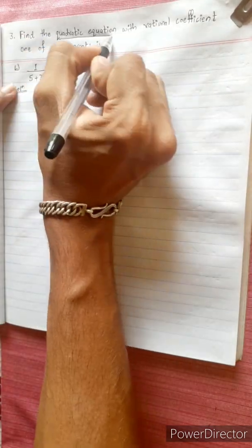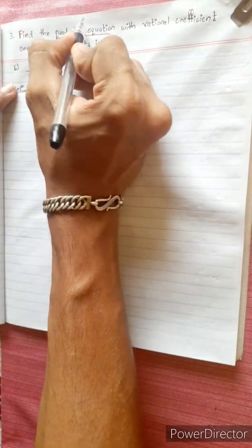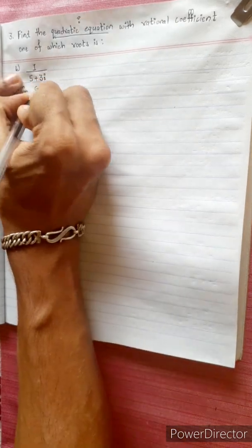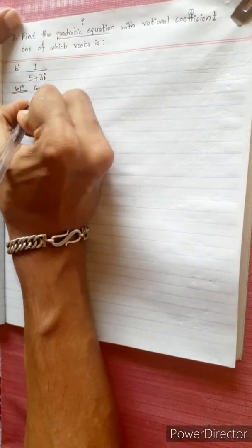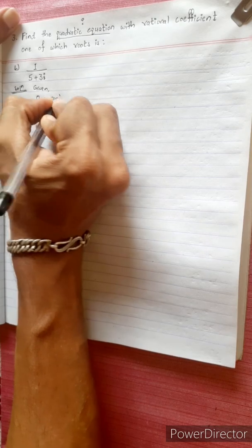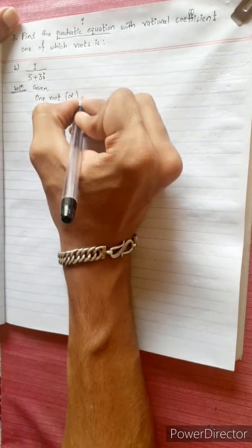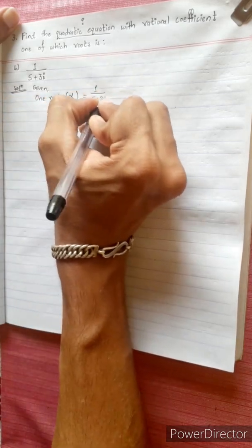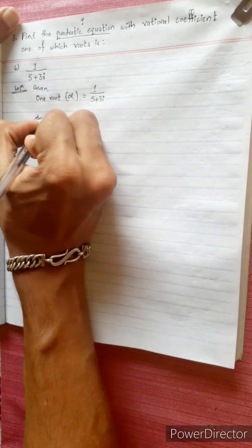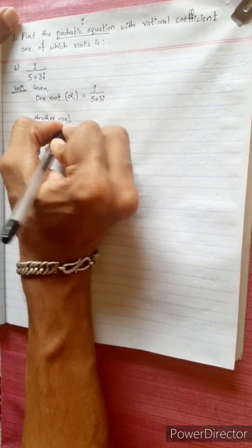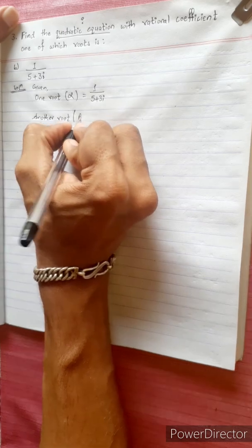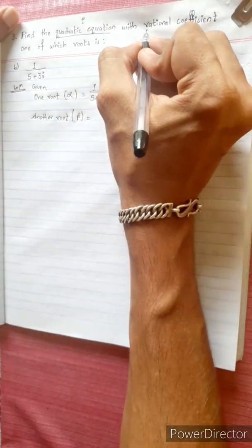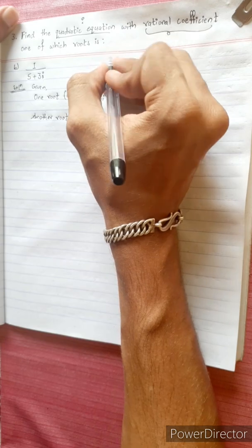This is a question: find a polynomial with rational coefficients, one of which root is given. One root is given: this root is 1/(5+3i). This is another root. Rational coefficient is the formula statement.